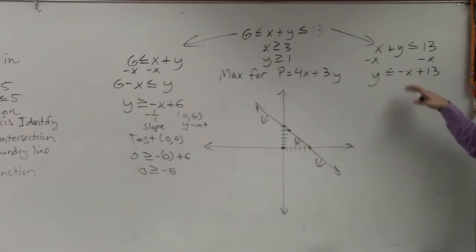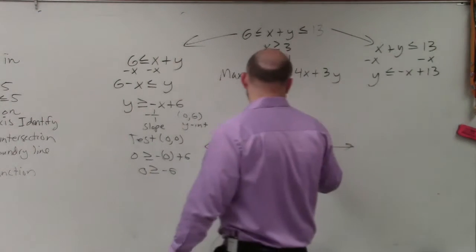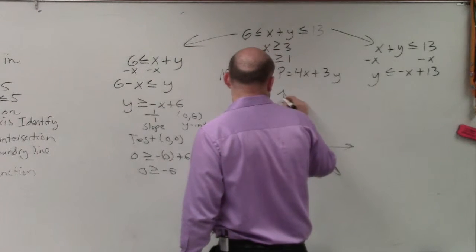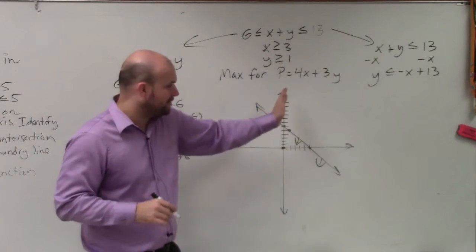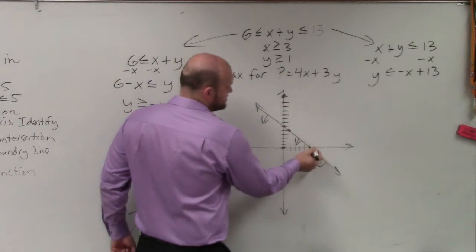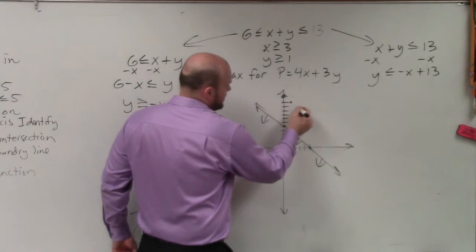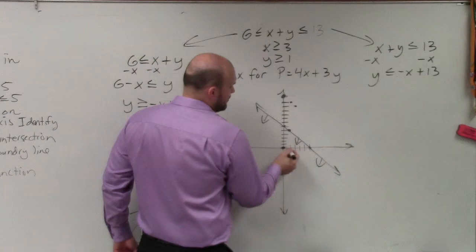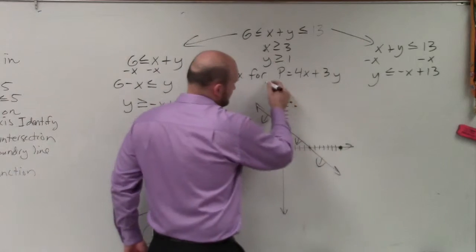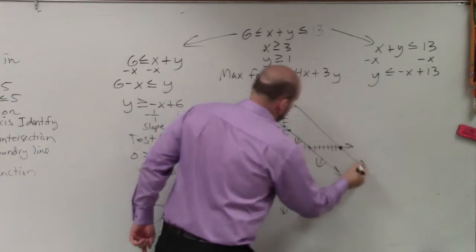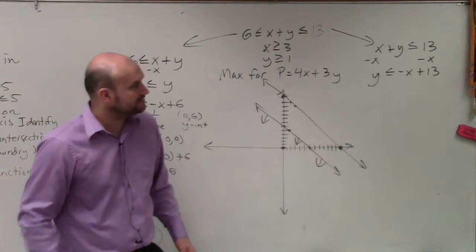The next one, y is less than or equal to negative x plus 13. Now I go up to 13: 6, 7, 8, 9, 10, 11, 12, 13. And then again, I'm going to have the same slope, down 1 over 1. So I know the next x-axis, I could follow down 1 over 1, but I also know it's going to be at 13. They're supposed to look like parallel lines.